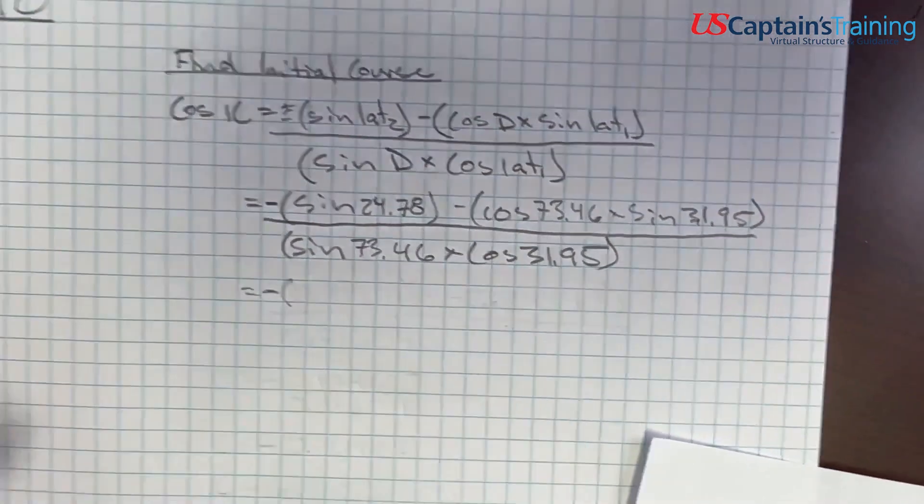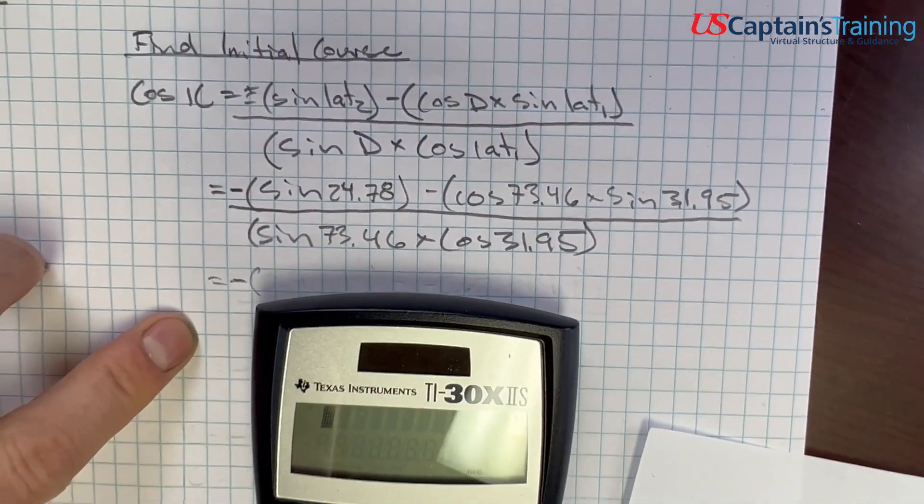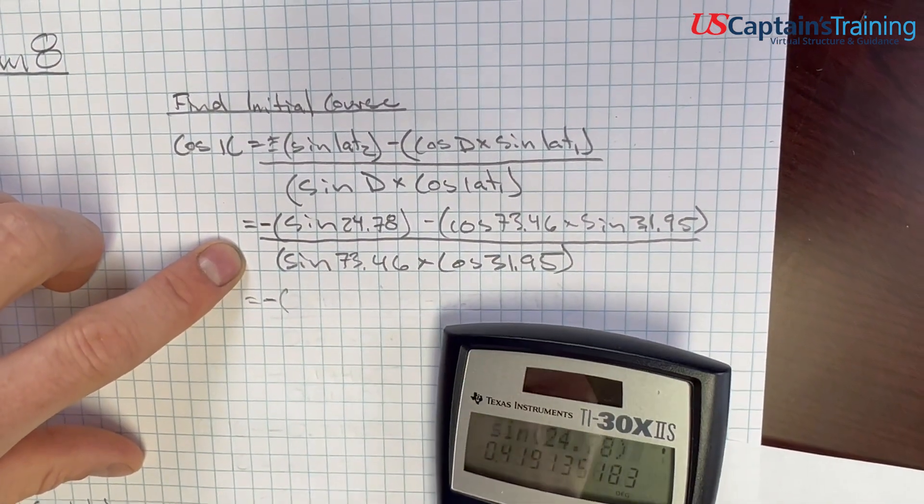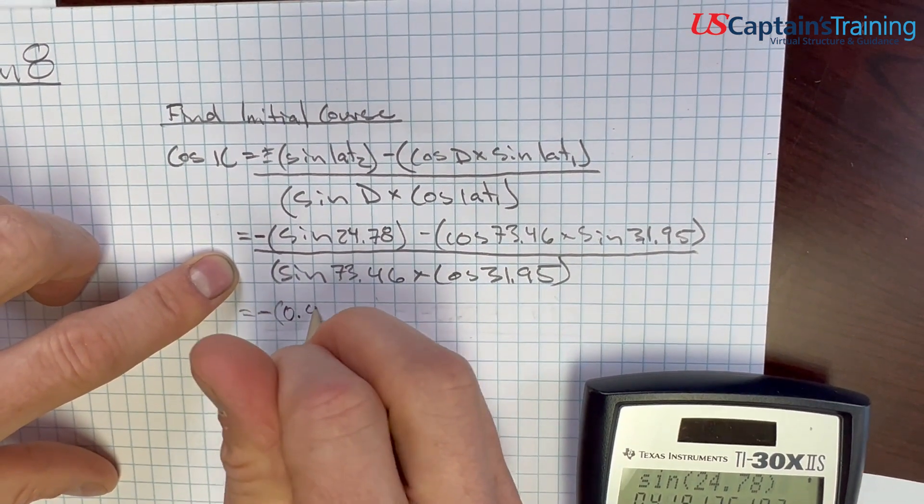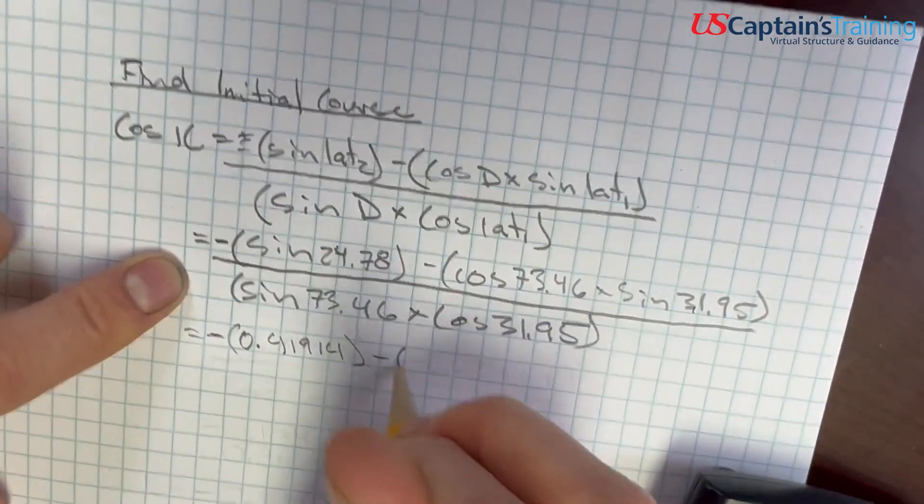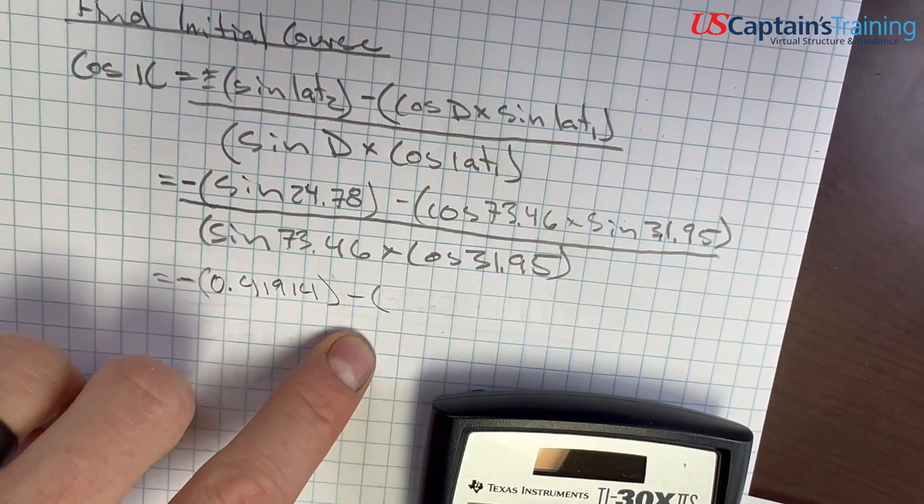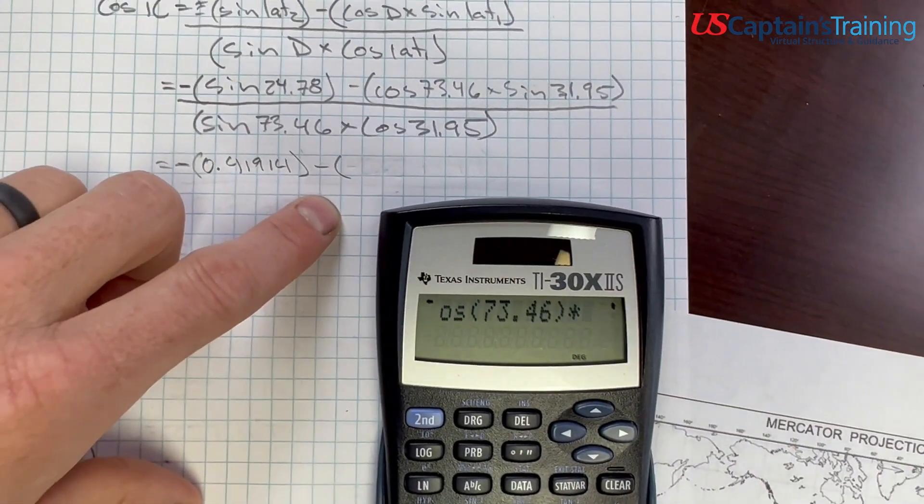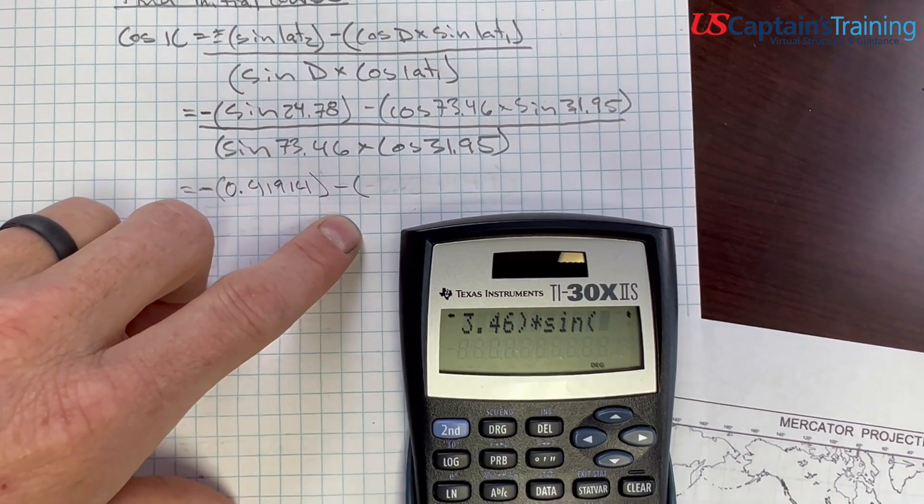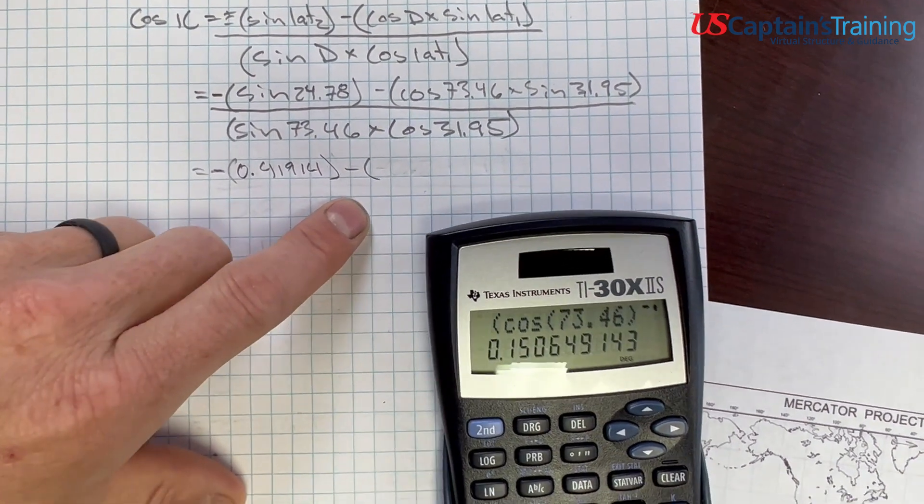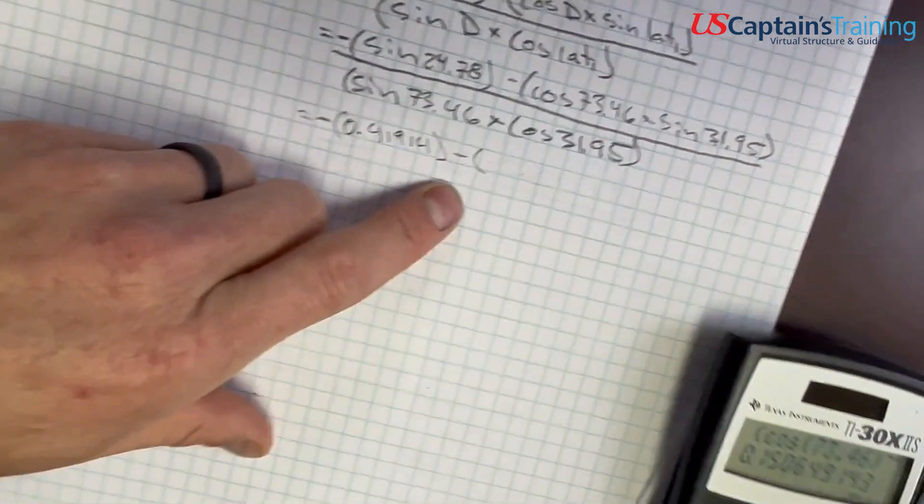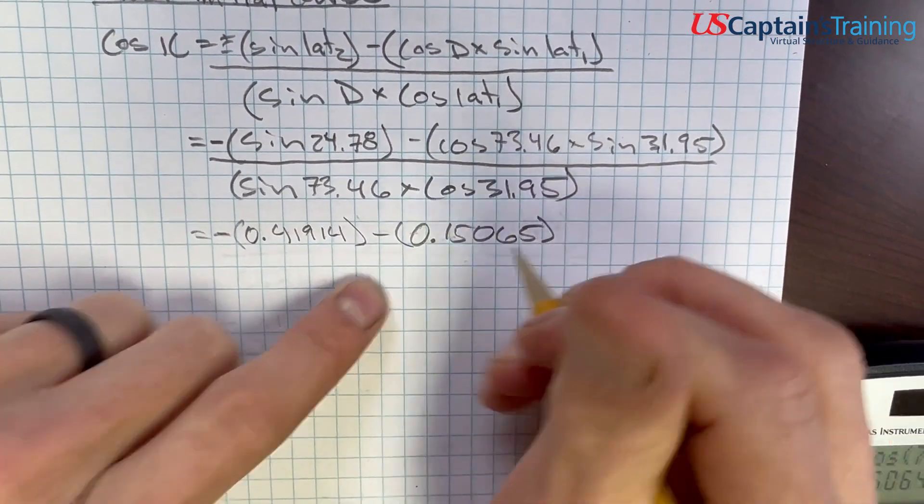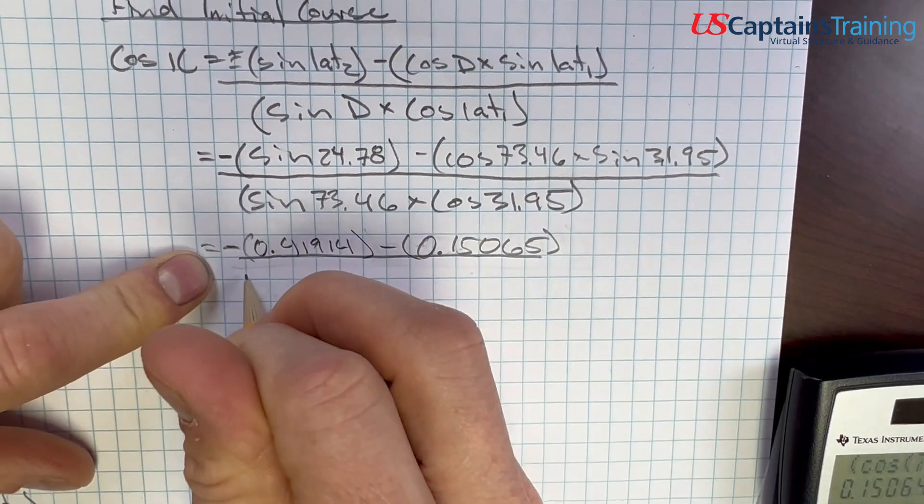And we're off. Sine 24.78 equals 0.41914, and minus whatever this one comes out to. So, open those parentheses, and cosine 73.46, close, times, sine, 31.95, close, close, enter. 0.15065, and all of this is over the answer to this.